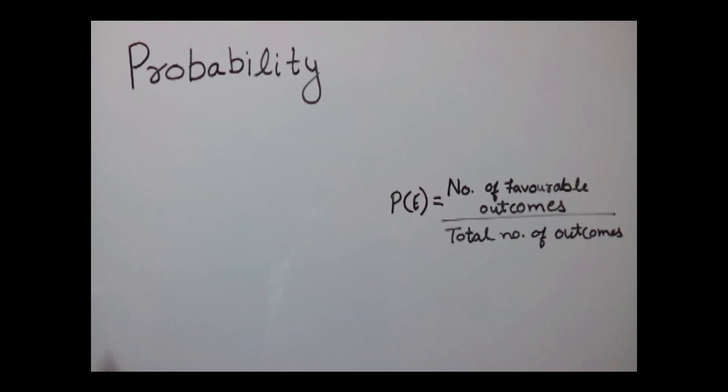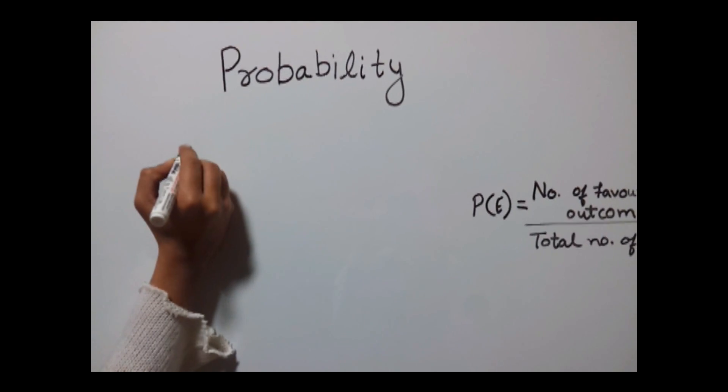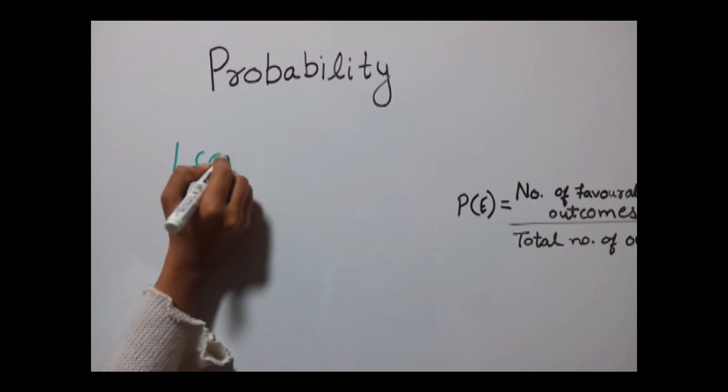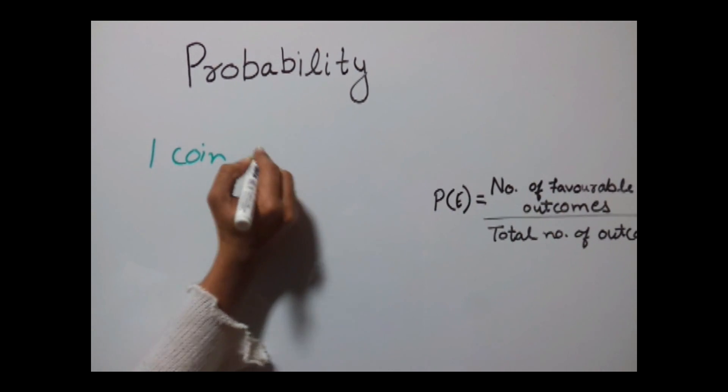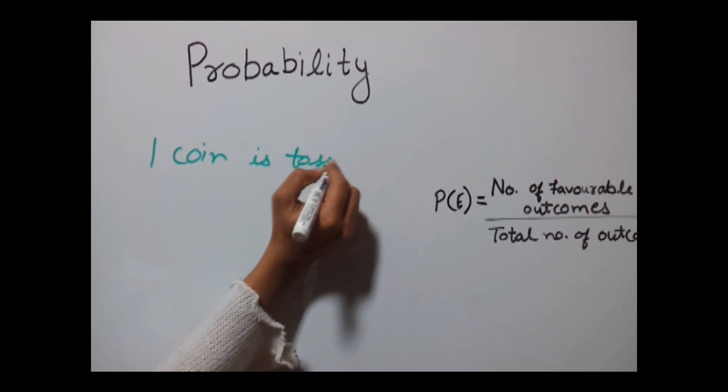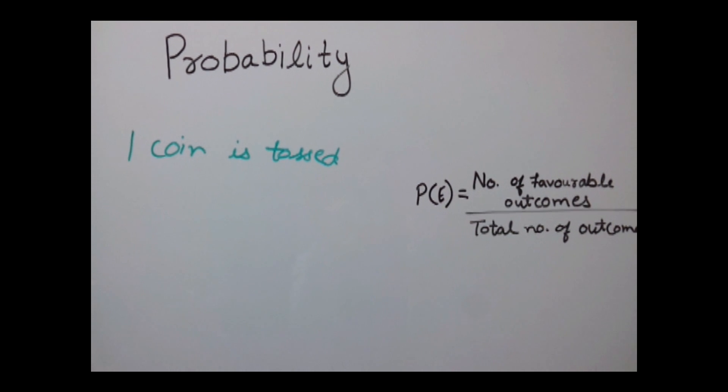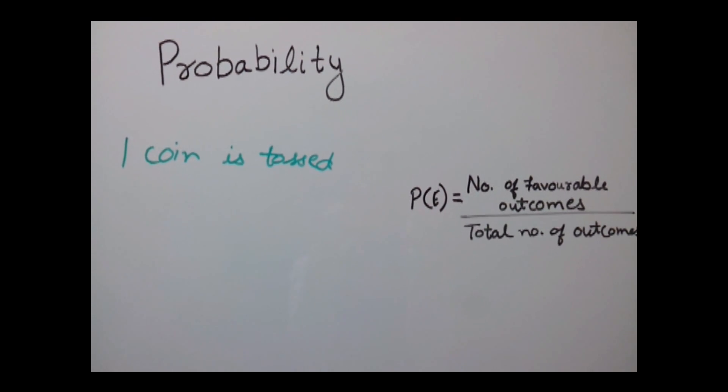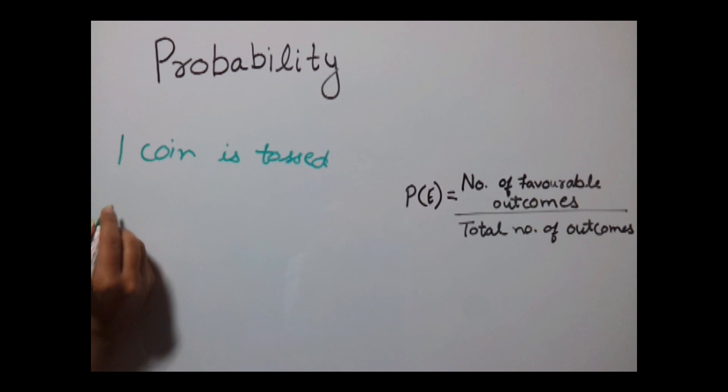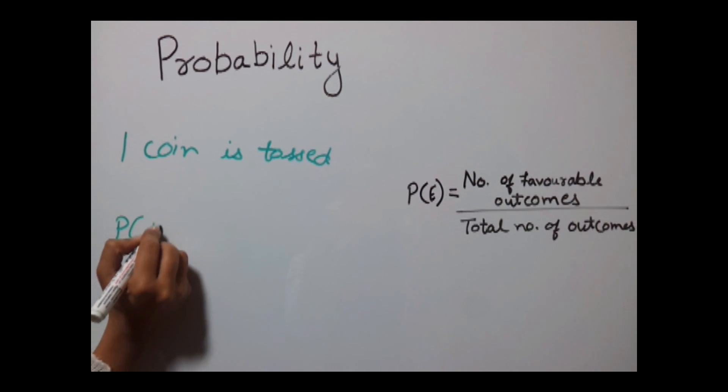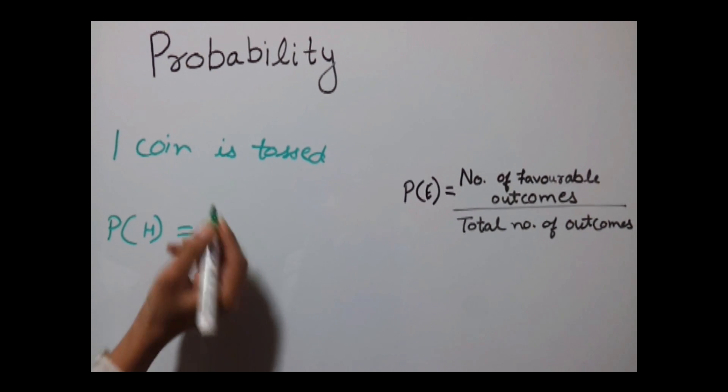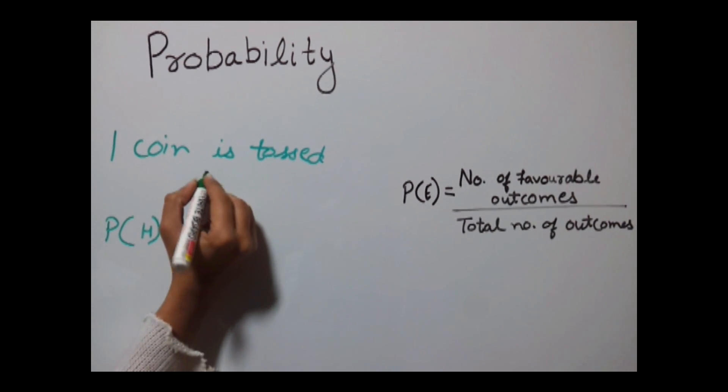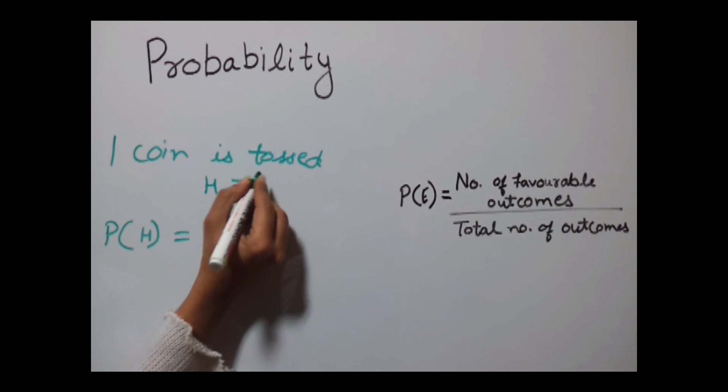For example, if a person tosses a coin, one coin is tossed and we want to find out the probability of head. What are the chances of head to come. Probability of head would be, since there are only two outcomes, which is either head or tail.